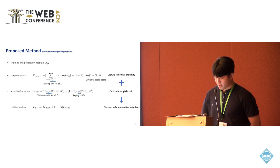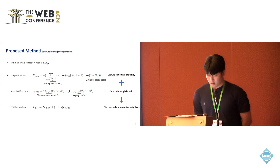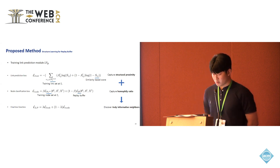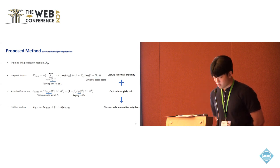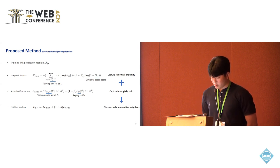Next, let me explain the structural learning part. We train the link prediction module using both link prediction loss and node classification loss simultaneously, which is to capture structural proximity and homophily ratio together for truly informative neighbors.